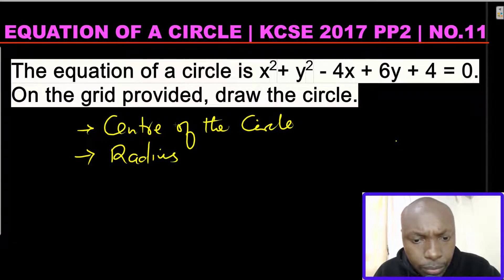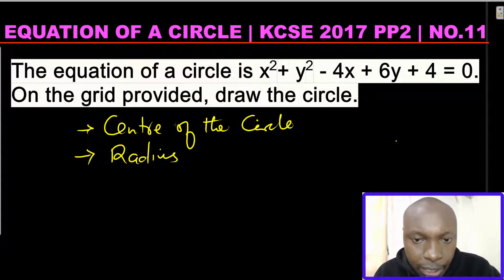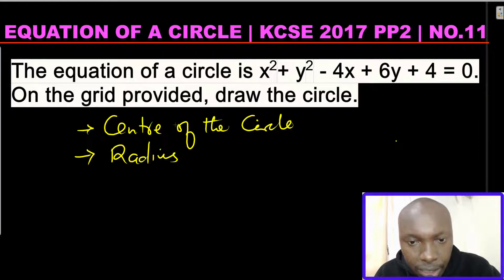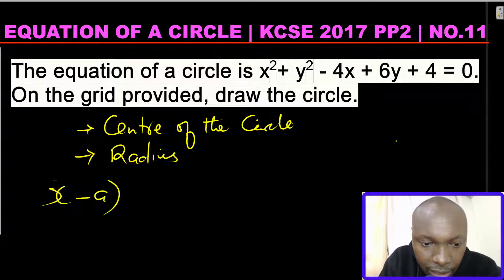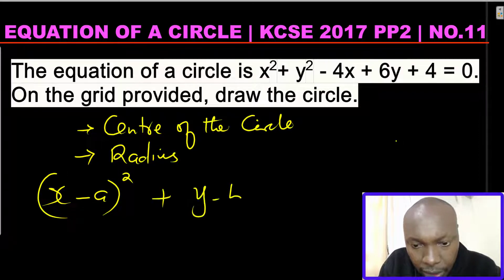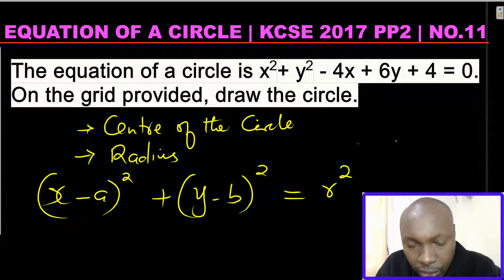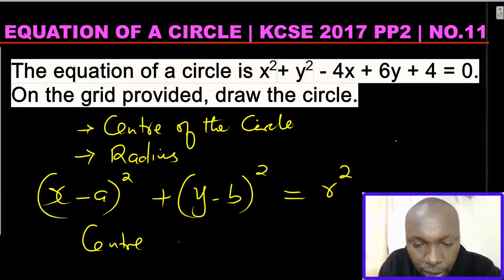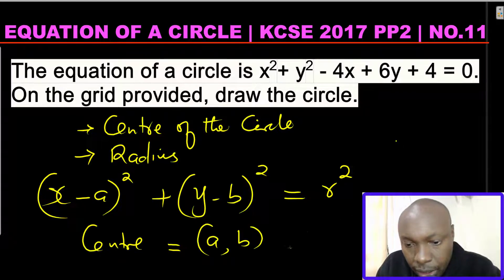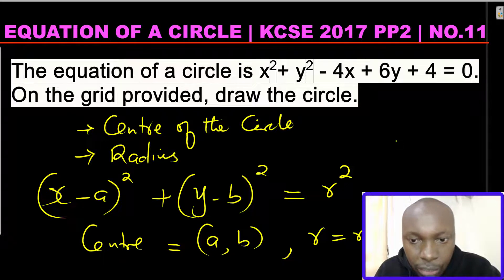Looking at that equation, how do you get the center and how do you get the radius? There is one thing you need to know — the standard equation of any circle with radius r. The standard equation is: x minus a, squared, plus y minus b, squared, equals r squared. The center of the circle is given as (a, b) and r is the radius.